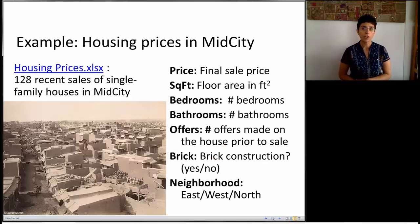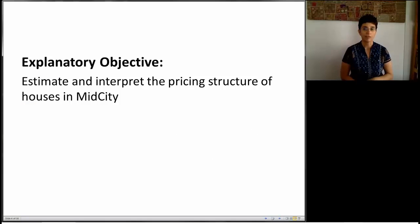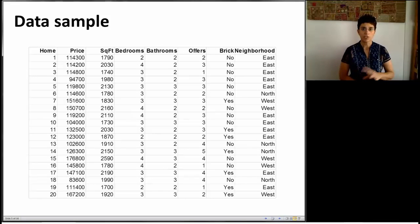I'll remind you we used a small data set on house prices in a city called MidCity, and we were trying to explain the pricing of houses in this city. Our objective as we defined it was estimate and interpret the pricing structure of houses in MidCity. Again, notice how we have to specify very carefully the analytic objective and map that to the business objective. Here was a small sample. This is the same data that we saw before, and now we're going to use the model that we generated earlier on.